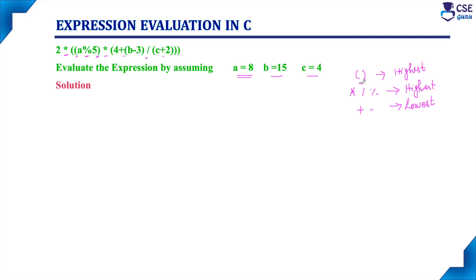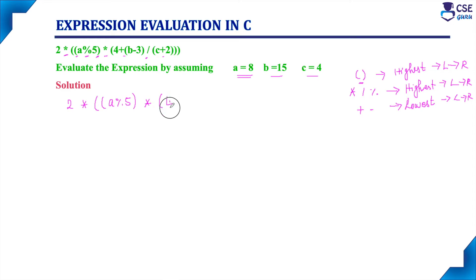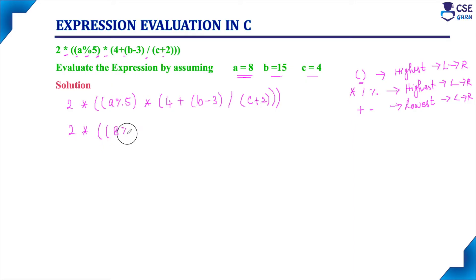If more than one bracket is present, we need to evaluate from left to right — so for brackets, associativity is left to right. All arithmetic operators' associativity is also left to right. The expression is 2 * (A % 5) * 4 + (B - 3) / (C + 2). Substituting values: 2 * (8 % 5) * 4 + (15 - 3) / (4 + 2).